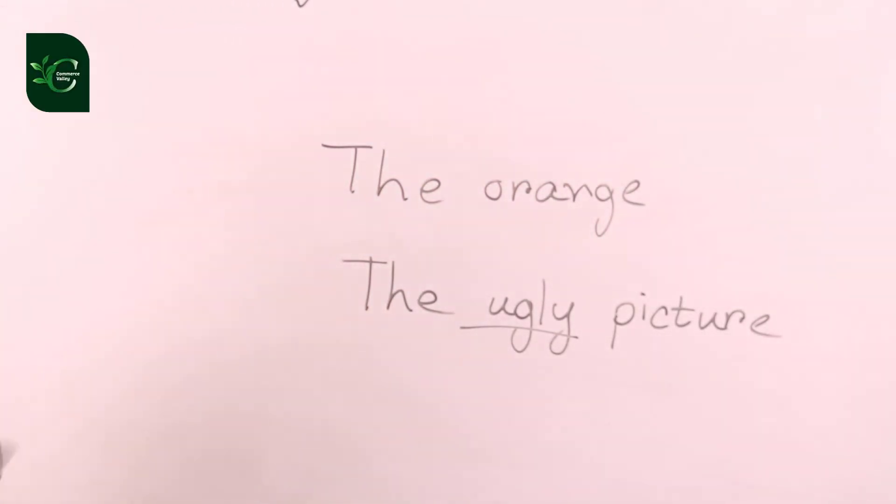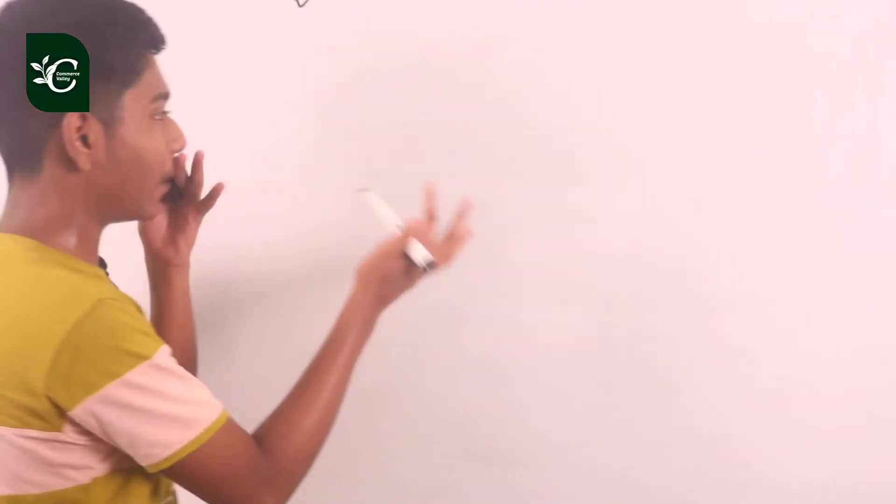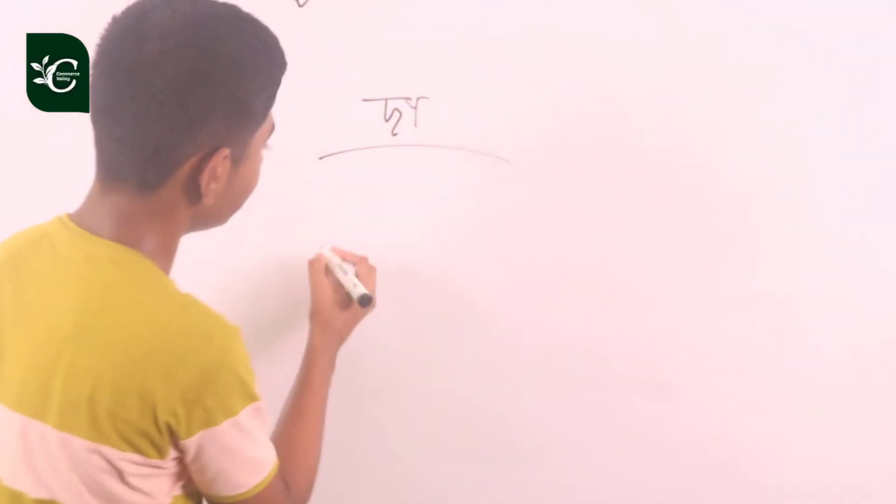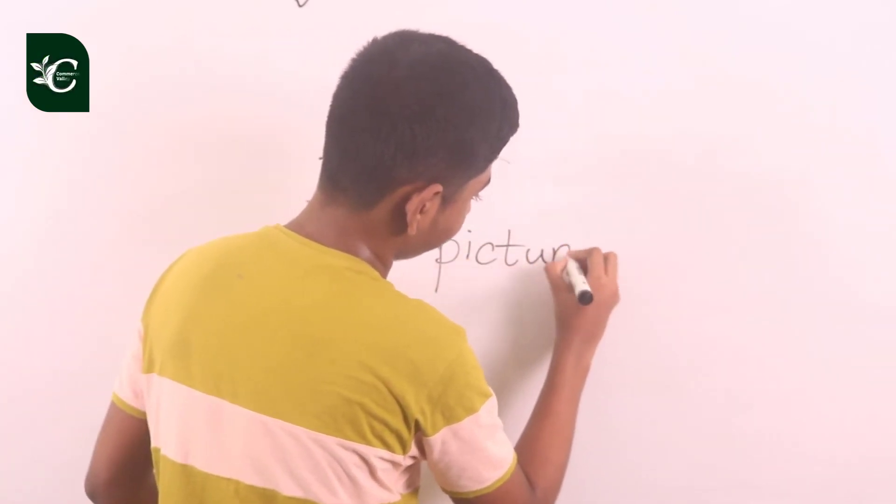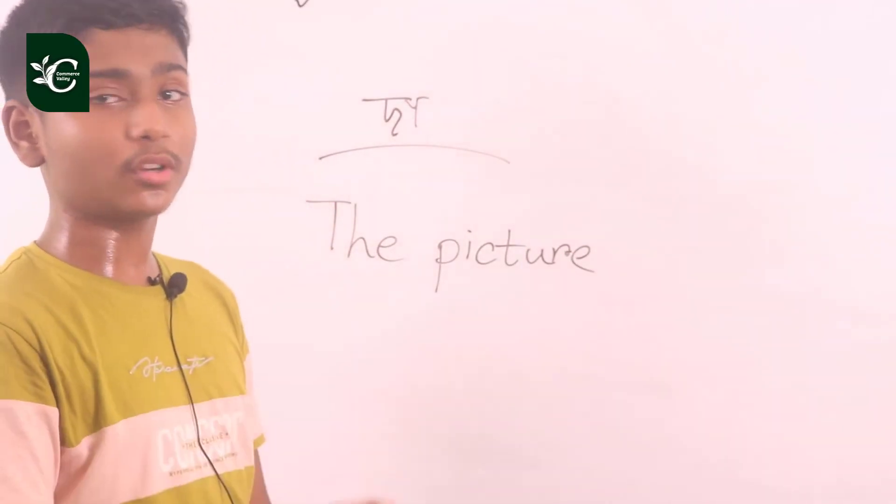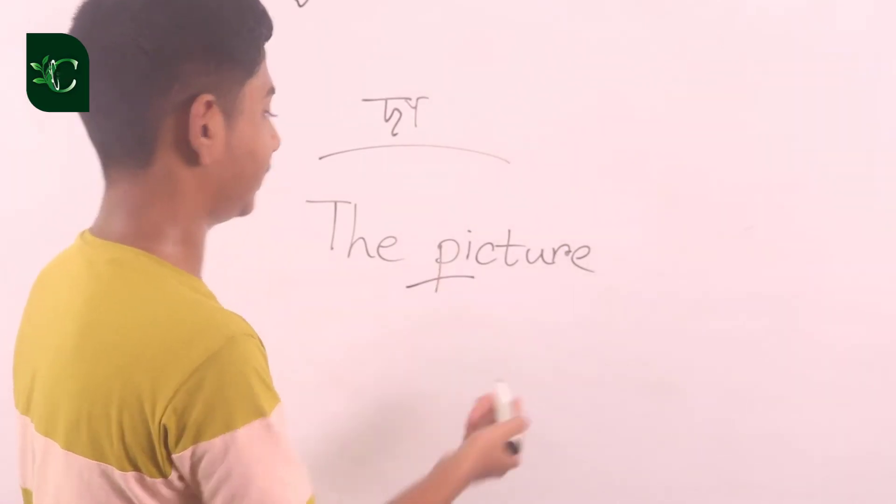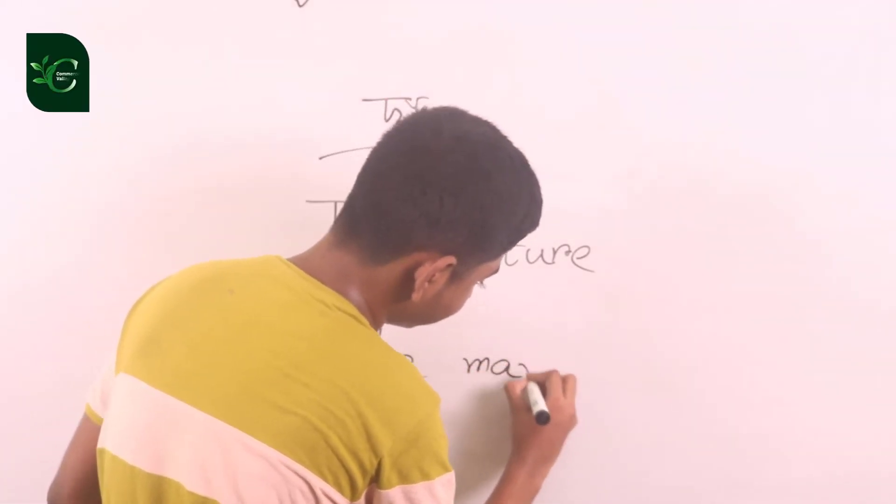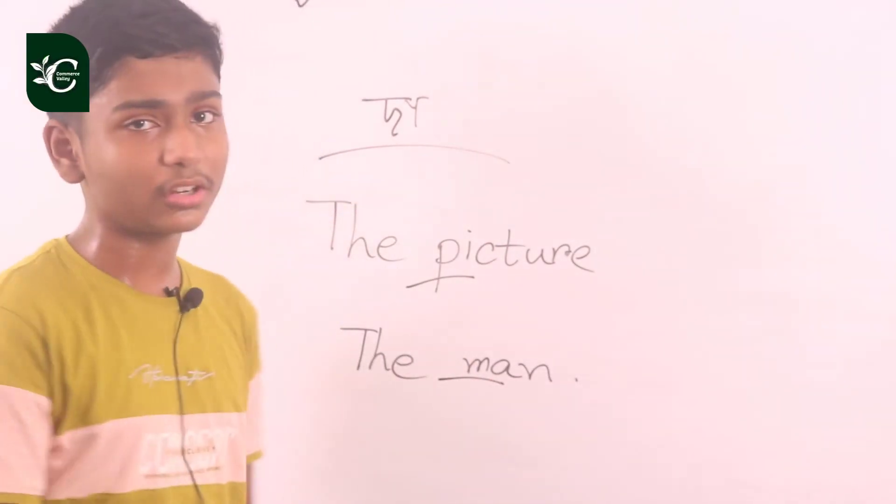The picture. When a vowel sound starts, we say 'dhi'. When it starts with a consonant, we pronounce it 'da'. Like the picture. When it starts with a consonant, we say 'da'. The picture.